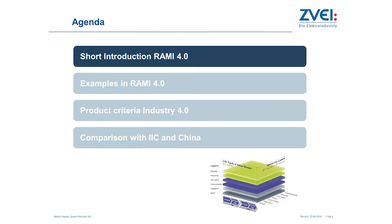I made a short introduction about the Reference Architecture Model Industry 4.0 — only two slides to give you the basis for this session. Then some examples of where you can use this reference architecture model, some new things about product criteria that we are bringing out now, and finally a comparison between the reference architecture from the US and the Chinese system architecture.